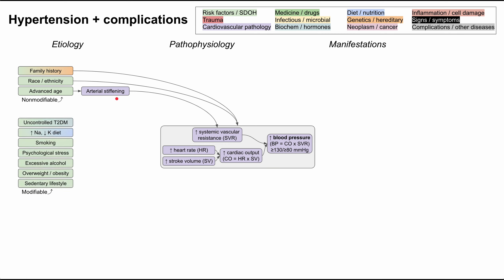Next are modifiable risk factors. Uncontrolled type 2 diabetes involves too much insulin and insulin resistance. High insulin has two effects relevant to hypertension: first, it causes proliferation of vascular muscle cells, which thickens the arterial walls, narrows the arterial lumen, and increases systemic vascular resistance. Second, high insulin increases intravascular volume — more blood means more stroke volume with each heartbeat, which also contributes to high blood pressure.